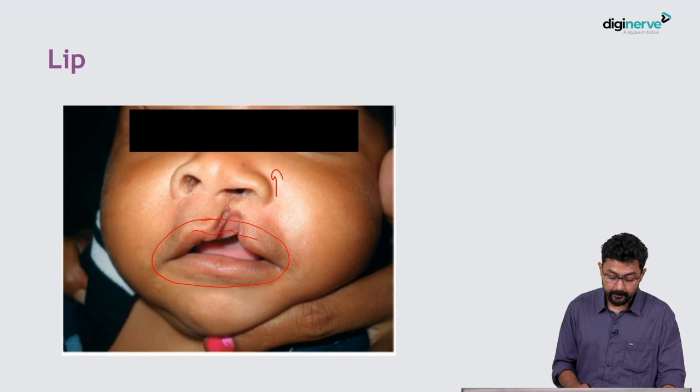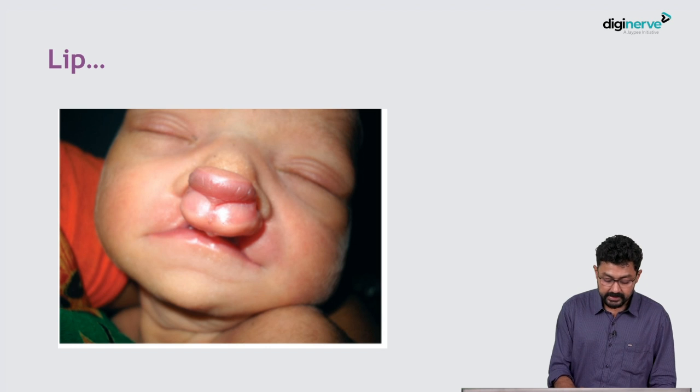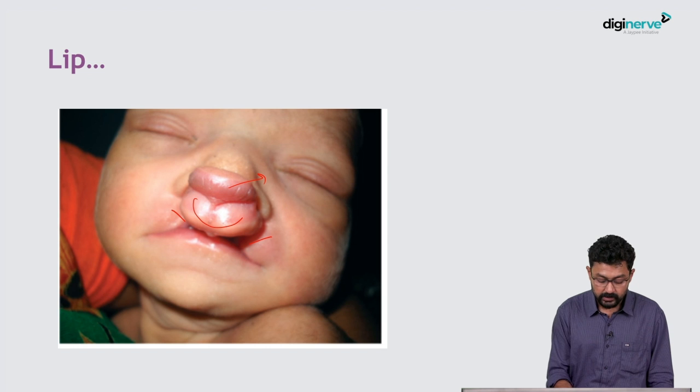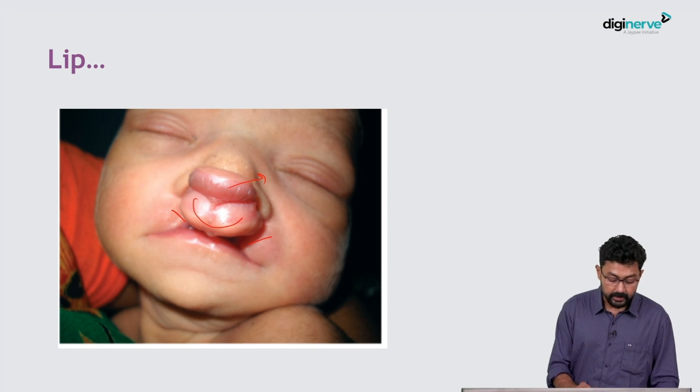This is called the premaxilla. So here you can see, along with the bilateral clefts here and here, the middle part of the lip is here and the premaxilla is also protruded. So here comes a challenge.